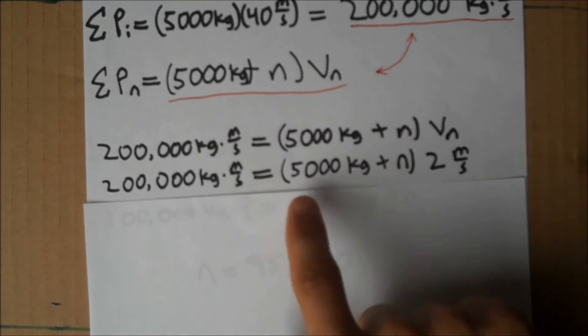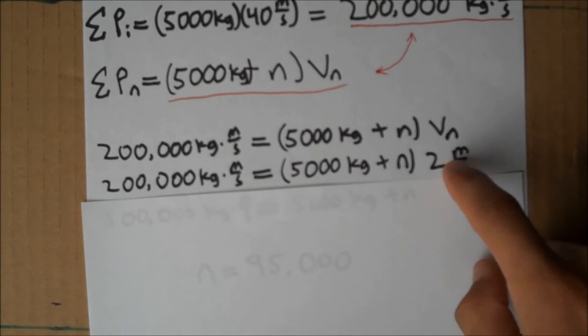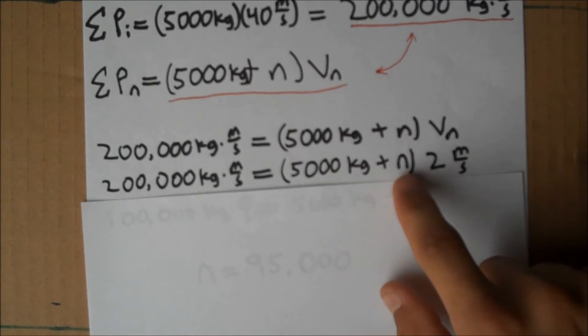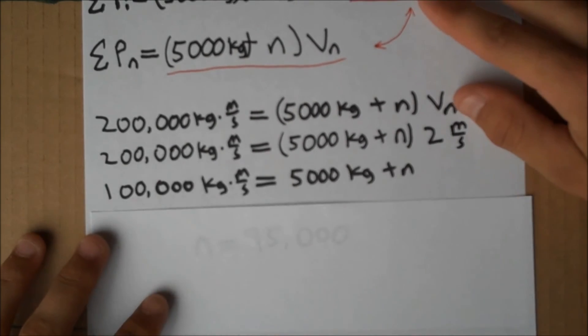This equation now will give us the n when v sub n has gone down all the way to 2. And that's exactly what we want to know. n is the number of garden gnomes. And this equation is going to tell us the n when our velocity is decreased all the way to 2 meters per second.